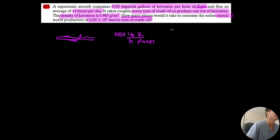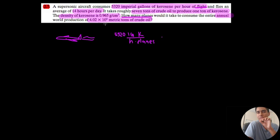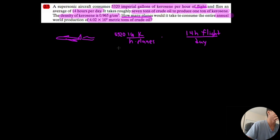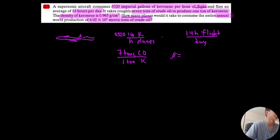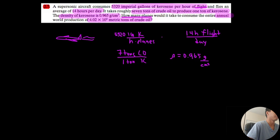What else do we know? It flies an average of 14 hours of flight per day. We also have more conversion factors: it takes roughly 7 tons of crude oil — we'll use CO to denote crude oil — to produce 1 ton of kerosene. The density of kerosene, rho, is 0.965 grams per centimeter cubed. The question asks how many planes would it take to consume the entire annual world production of 4.02 × 10⁹ metric tons of crude oil per year. That's the tricky part.